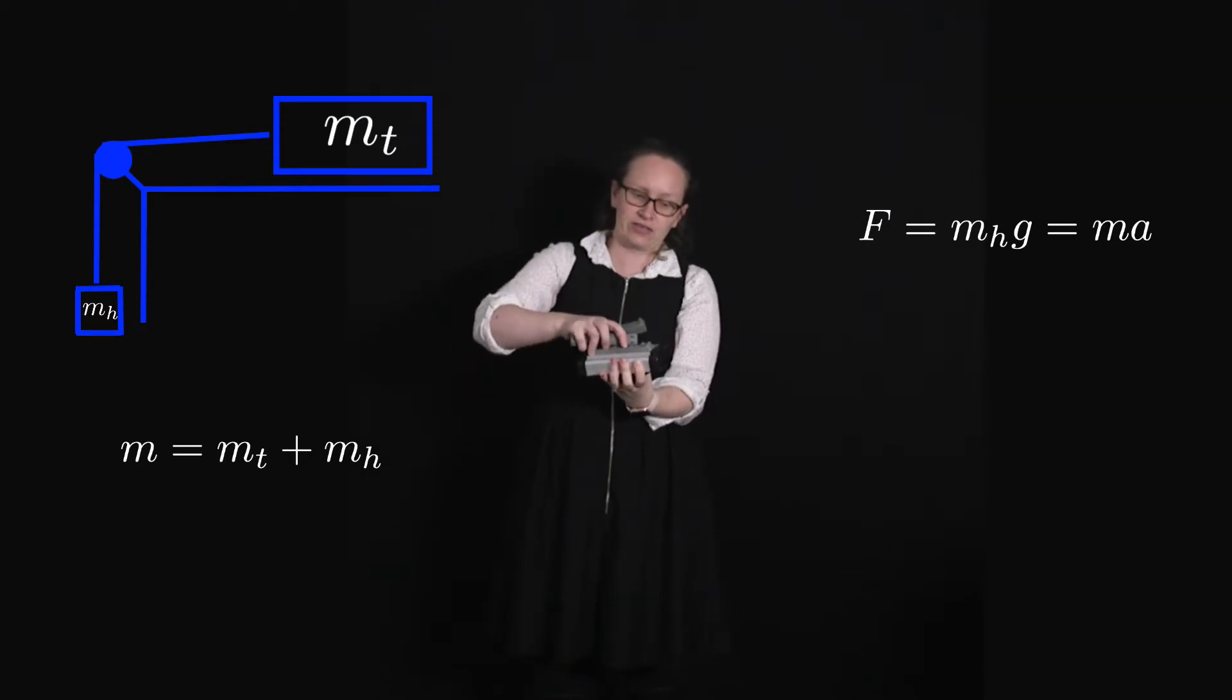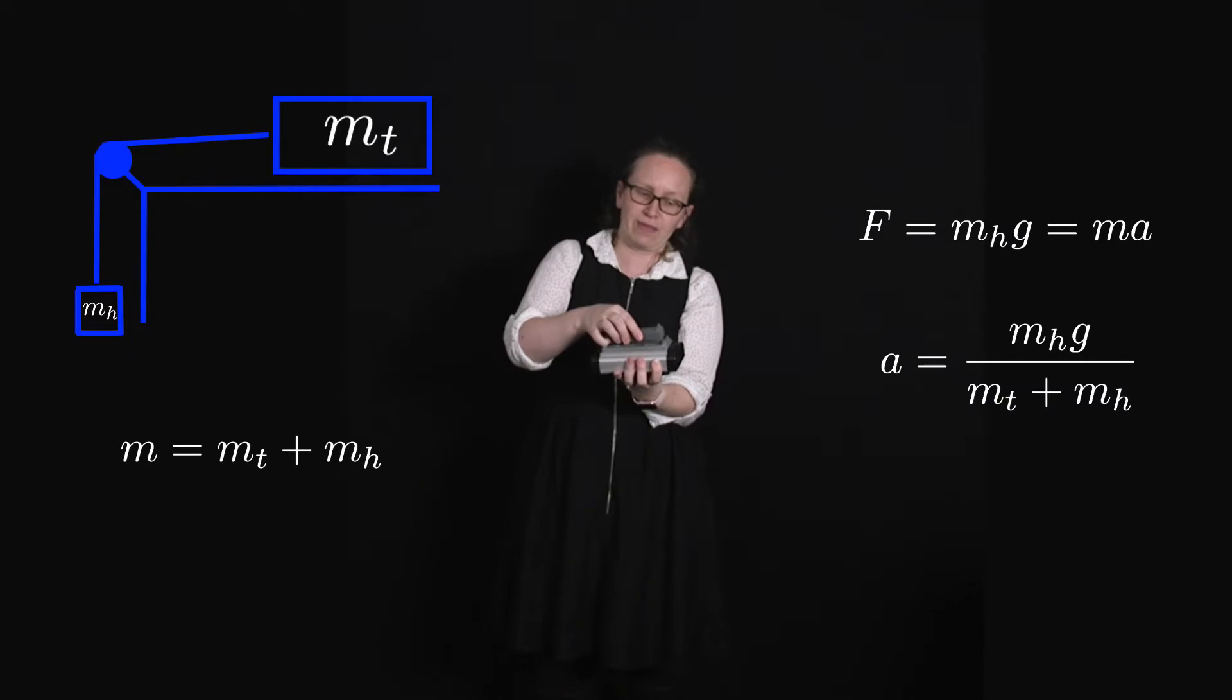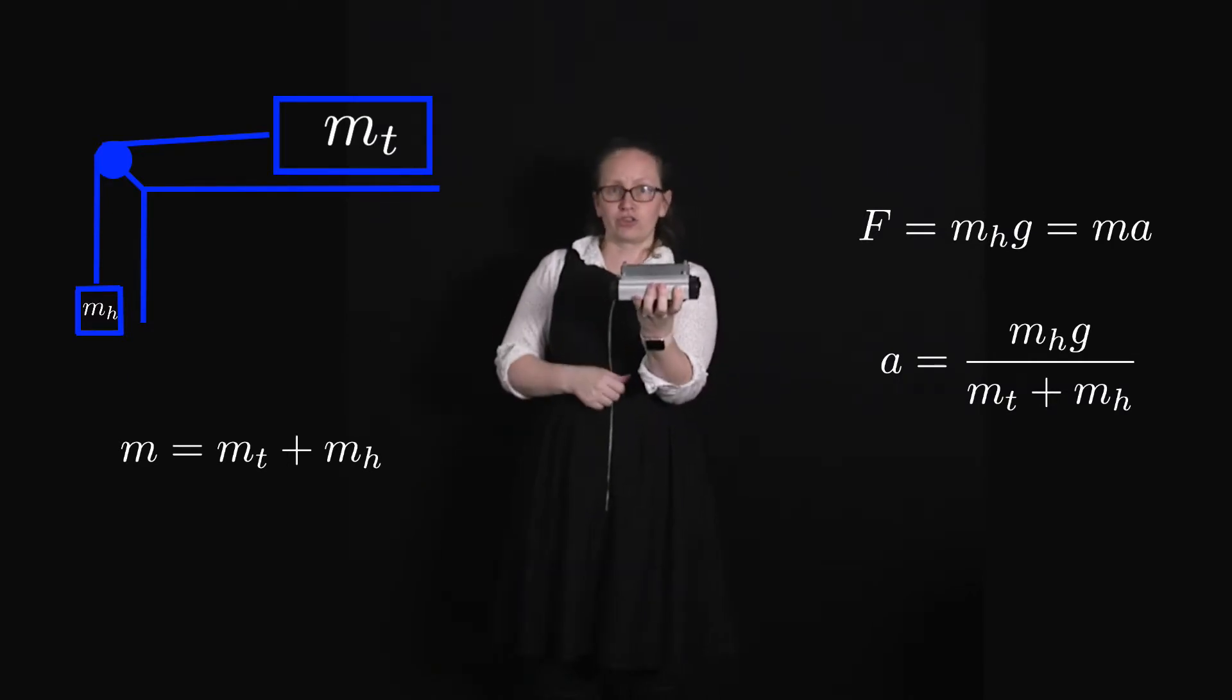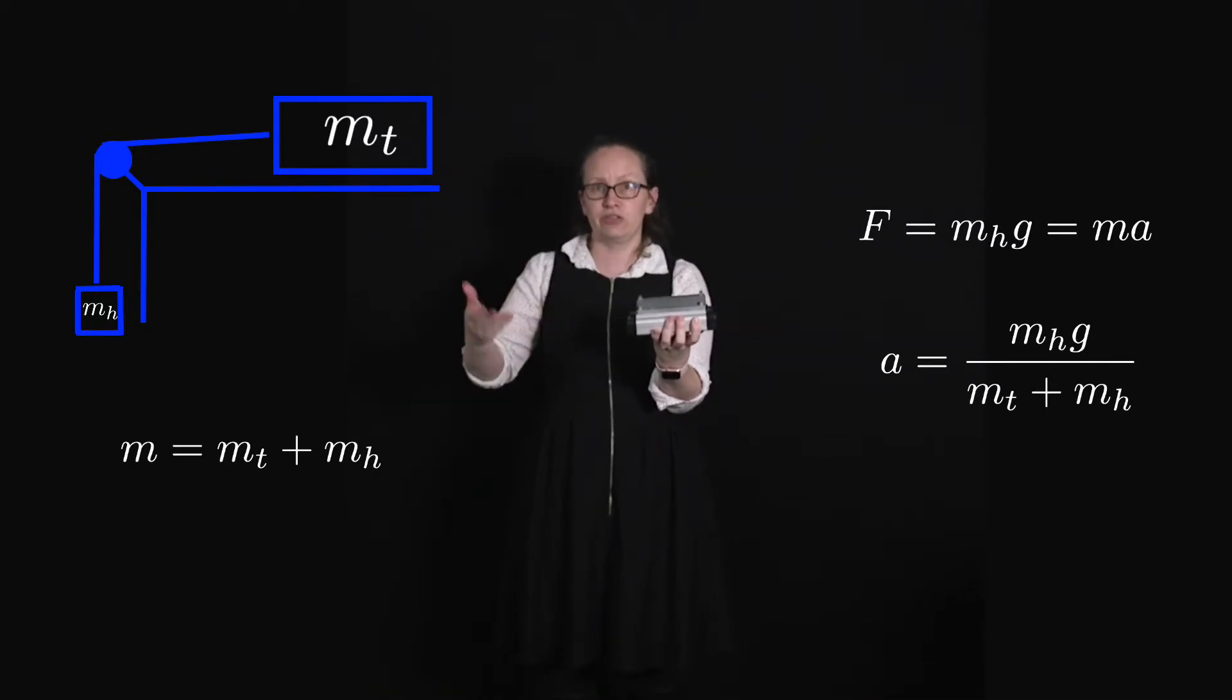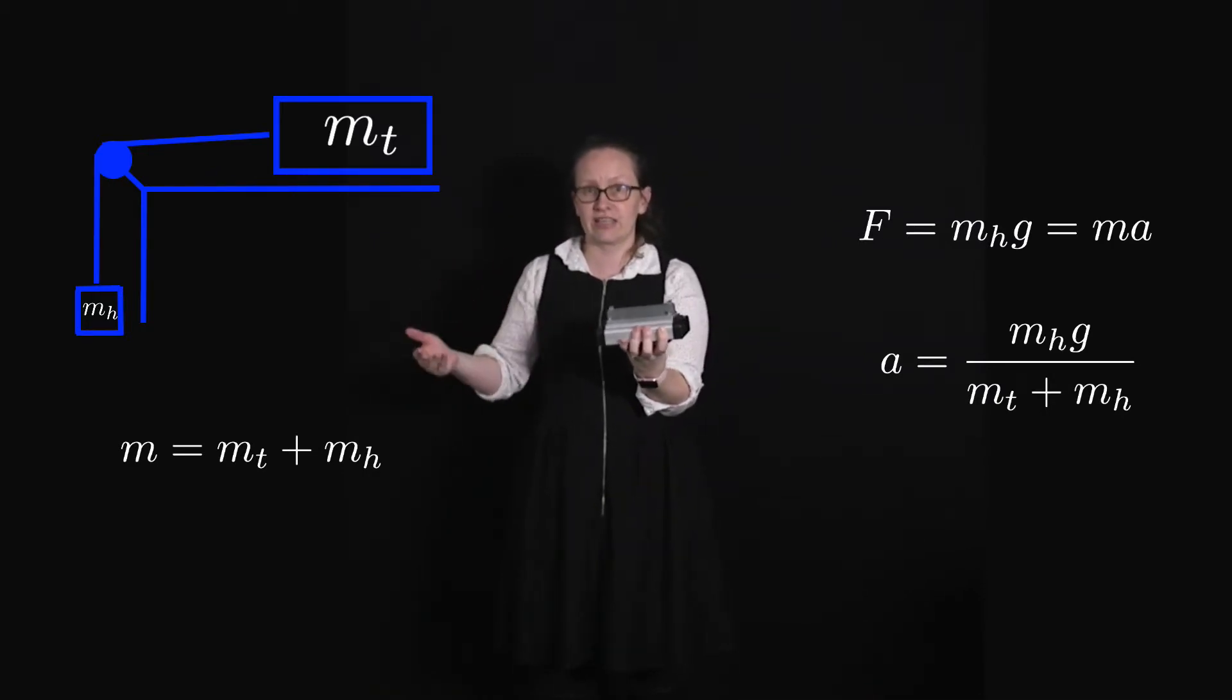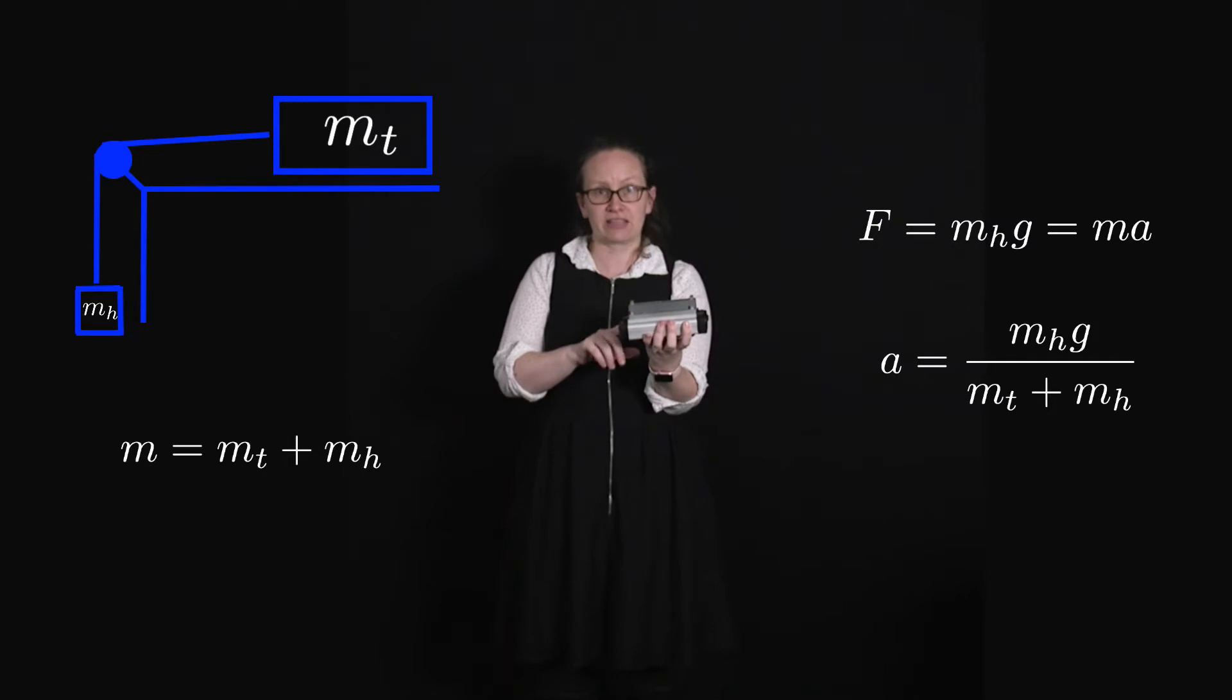And you can look at the difference in acceleration when you've got different amounts of mass on the trolley. Just remember, if you do it this way, to account for the mass of the entire system. So in your calculation for the acceleration, you do need to account for the mass on the hanger as well as the mass on the trolley.